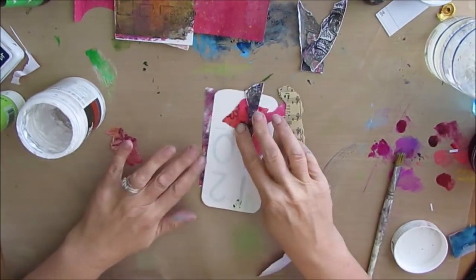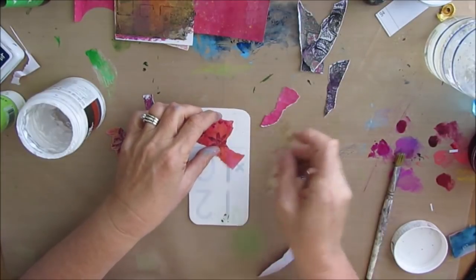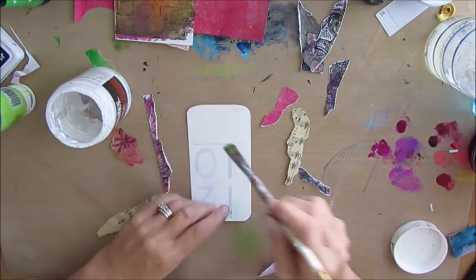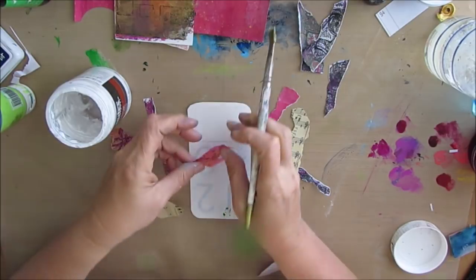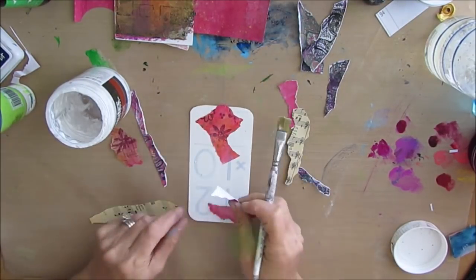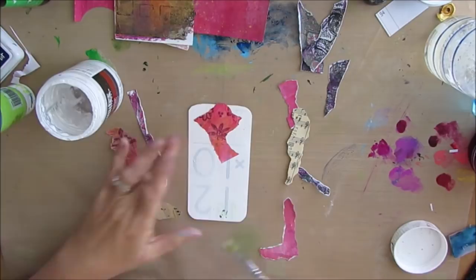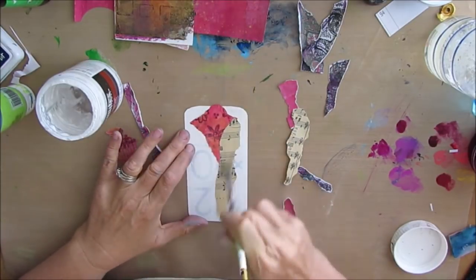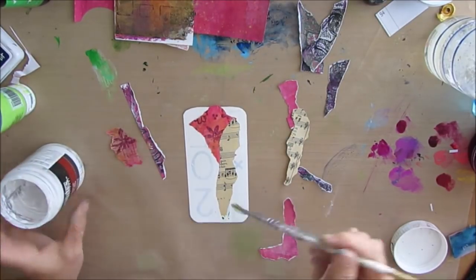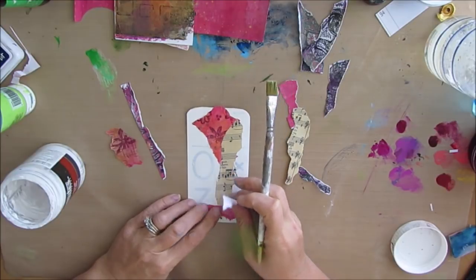Even a gel print that you don't think really works can make a wonderful addition to a collaged background. I've just ripped off all the hard edges or straight edges because I like the look of the ripped ones. And I'm just going to glue this down. When I'm collaging for background color, I want different shapes, different textures. And I'm going to layer them on.